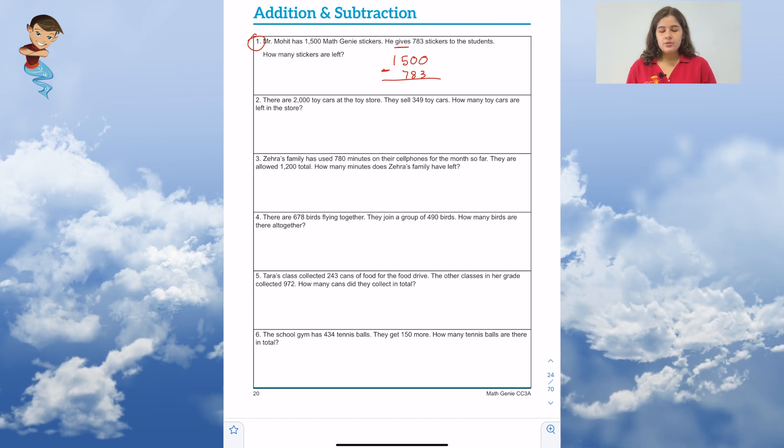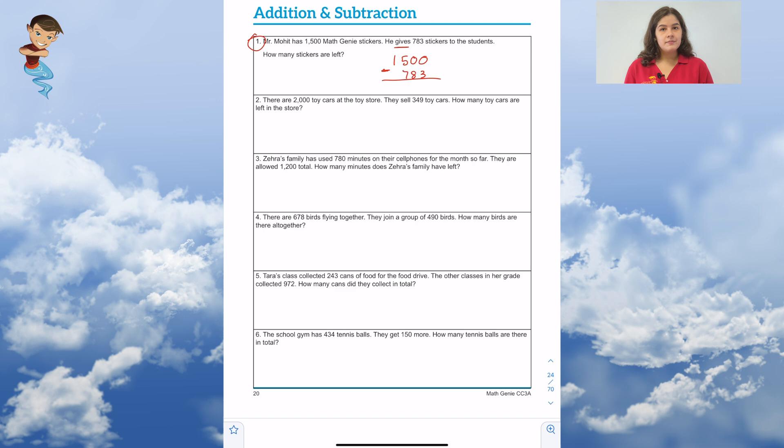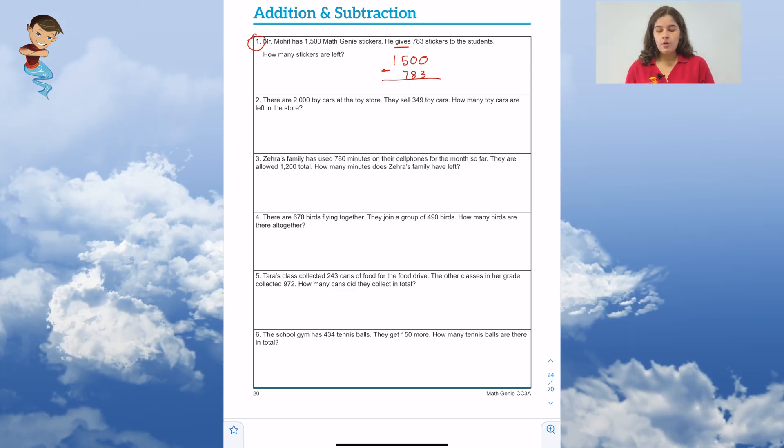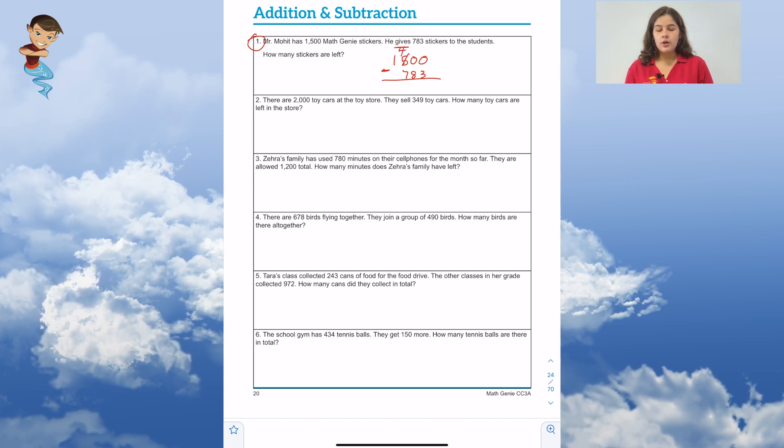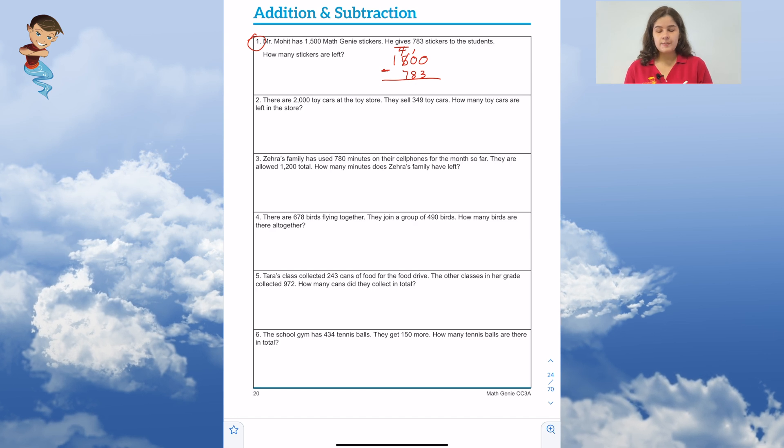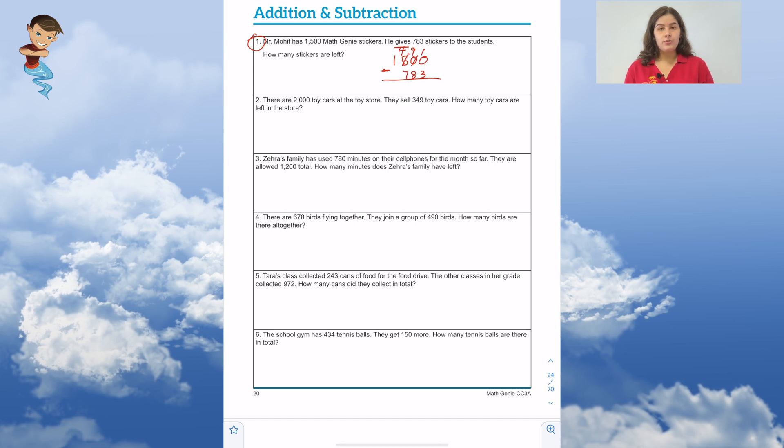To start off, we need to do 0 minus 3. But we can't do that because 0 is less than 3. So we know we have to borrow. We're going to go to our 5 and borrow 1, which is going to give us 4. We're going to carry our 1 over to our tens place. And we need to borrow one more time into our ones place. So we're going to cross out our 10, make it a 9, and carry our 1 over.